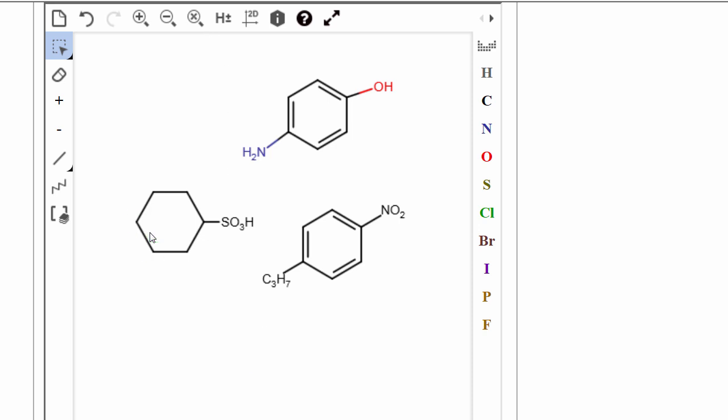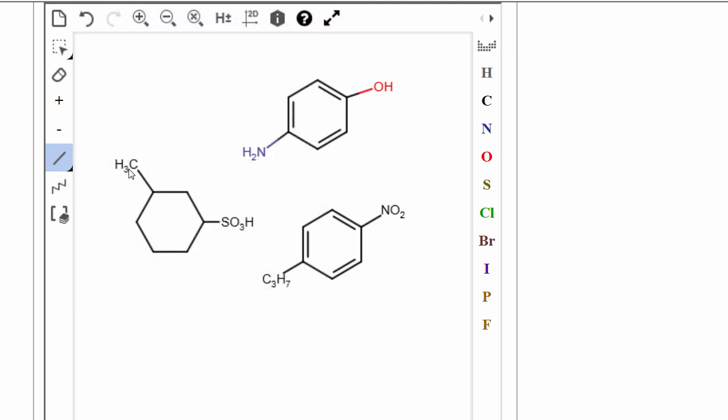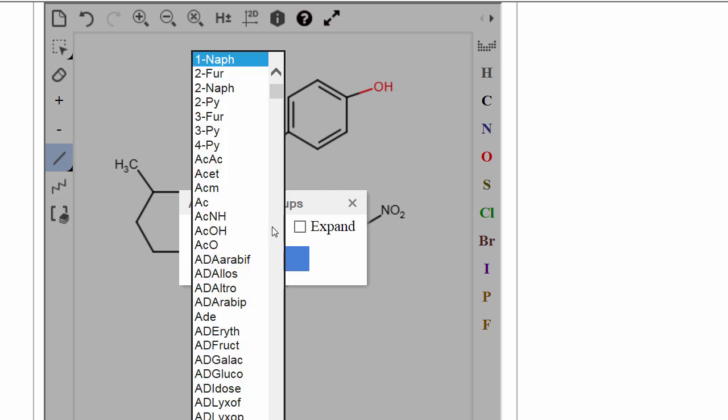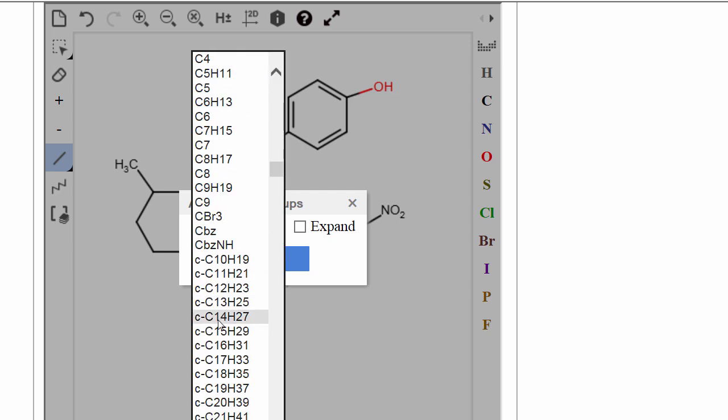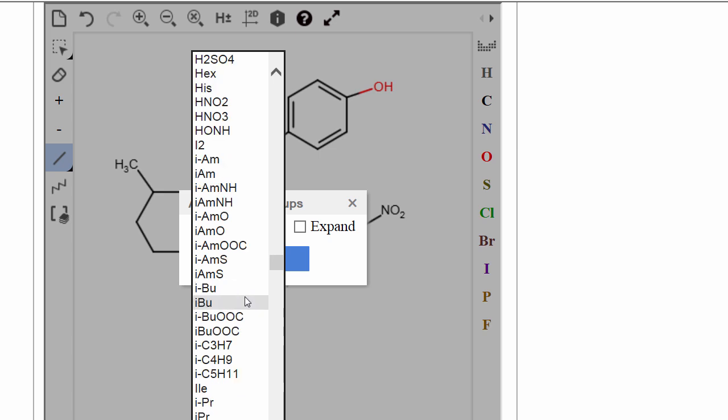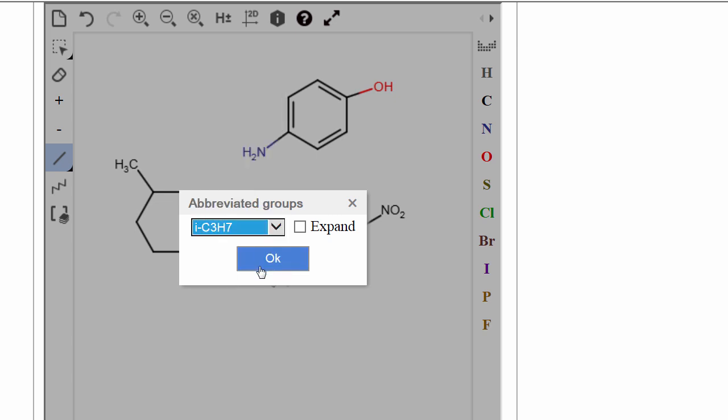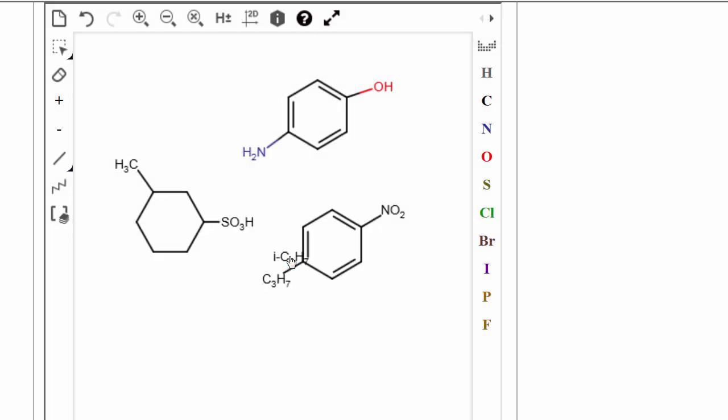Let's say I want to put an isopropyl group here. I'm going to put that single bond there. I have to replace this methyl group. Click there. I want to go down to the iso. Here it would be, the i-C3H7. That's for isopropyl. Click OK. And then I'll put that right there.